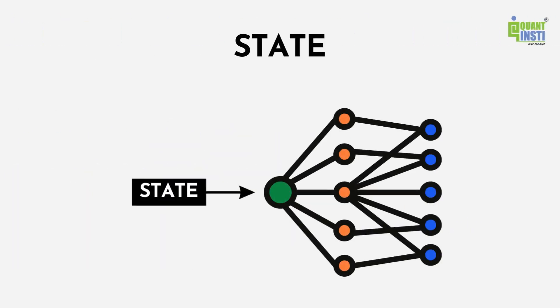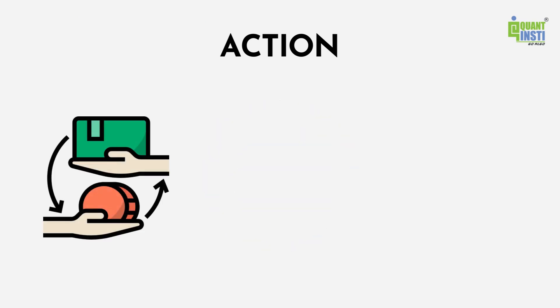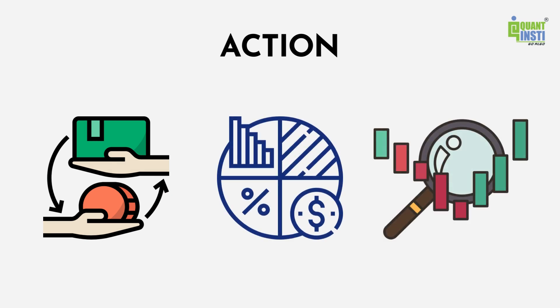State: The state represents the current situation or context in which the agent finds itself within the environment. It is the information that the agent uses to make decisions. Action: Actions are the decisions or moves that the agent can take within the environment. These actions can include buying or selling assets, adjusting portfolio weights, or any other relevant decision in the context of trading.